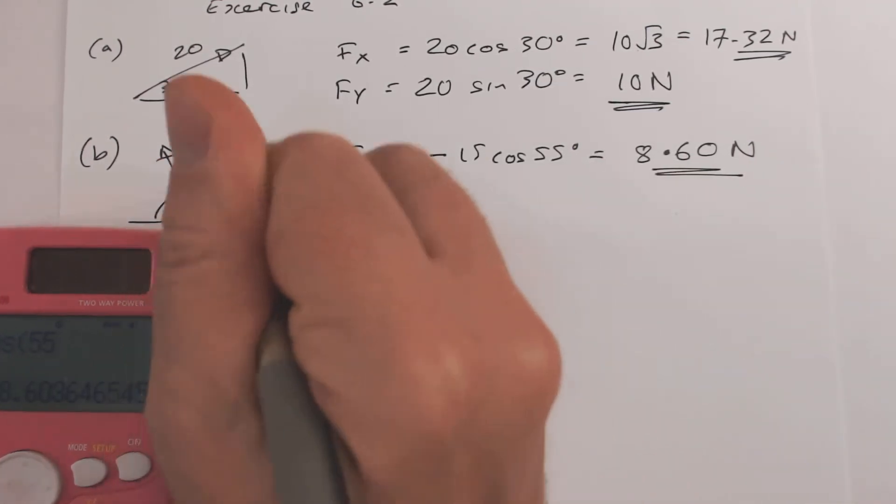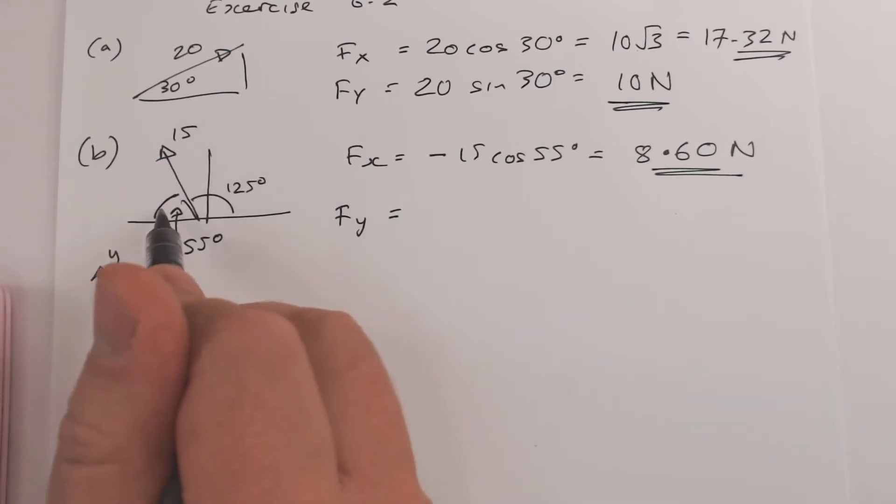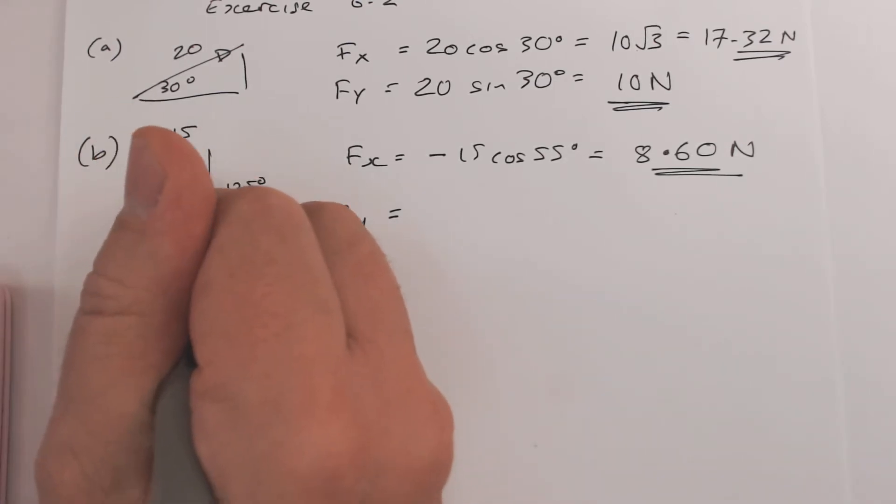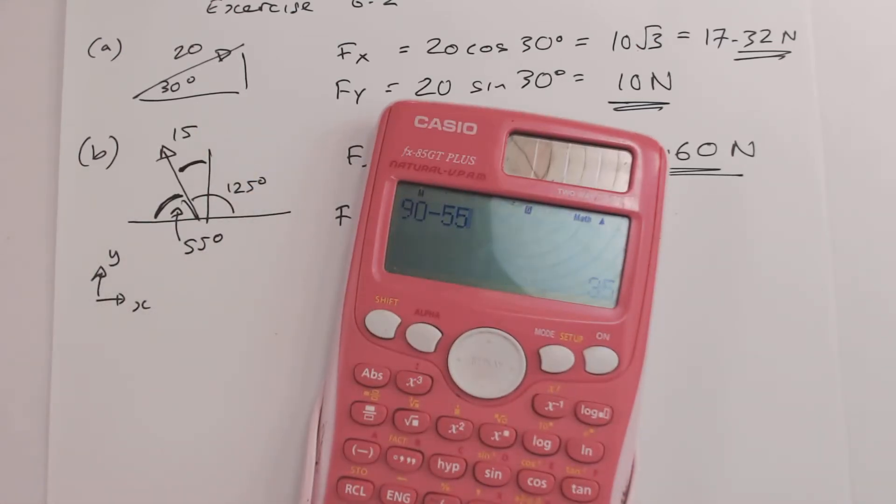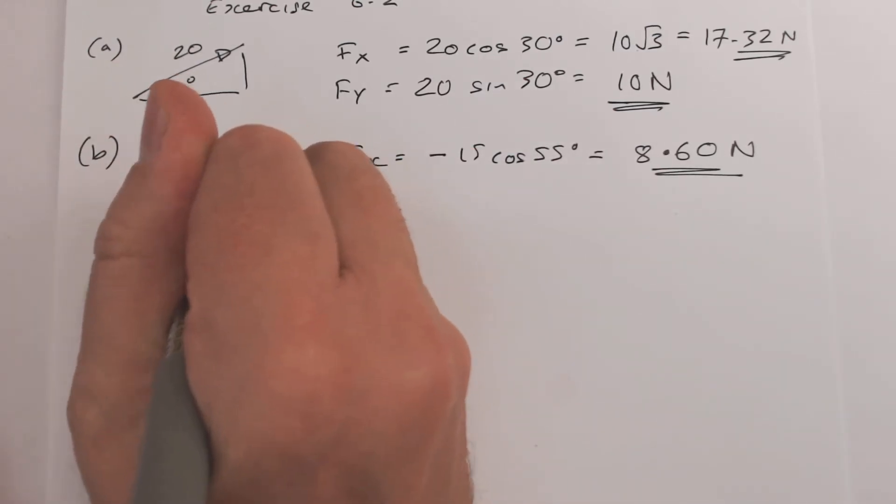Fy is going in the correct direction, it's going upwards. So if this direction here is 55, so this angle here is going to be what? Well, let's work that out. So 90 take away 55 is 35, so this angle here is going to be 35 degrees.